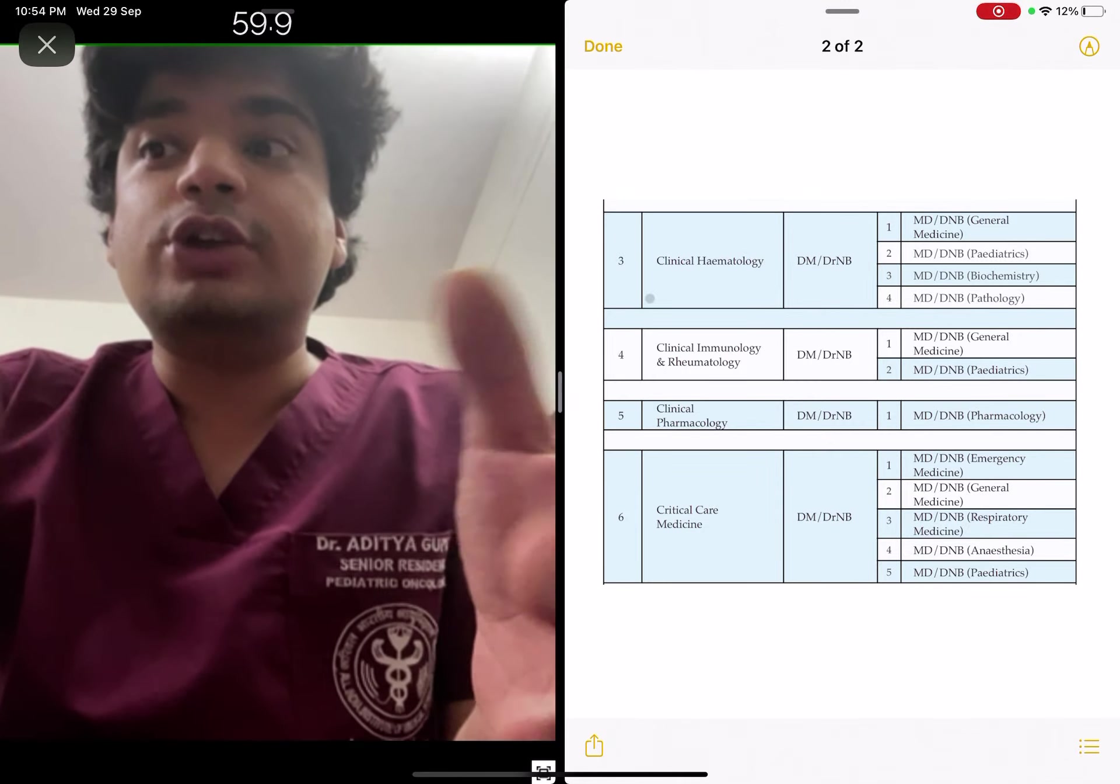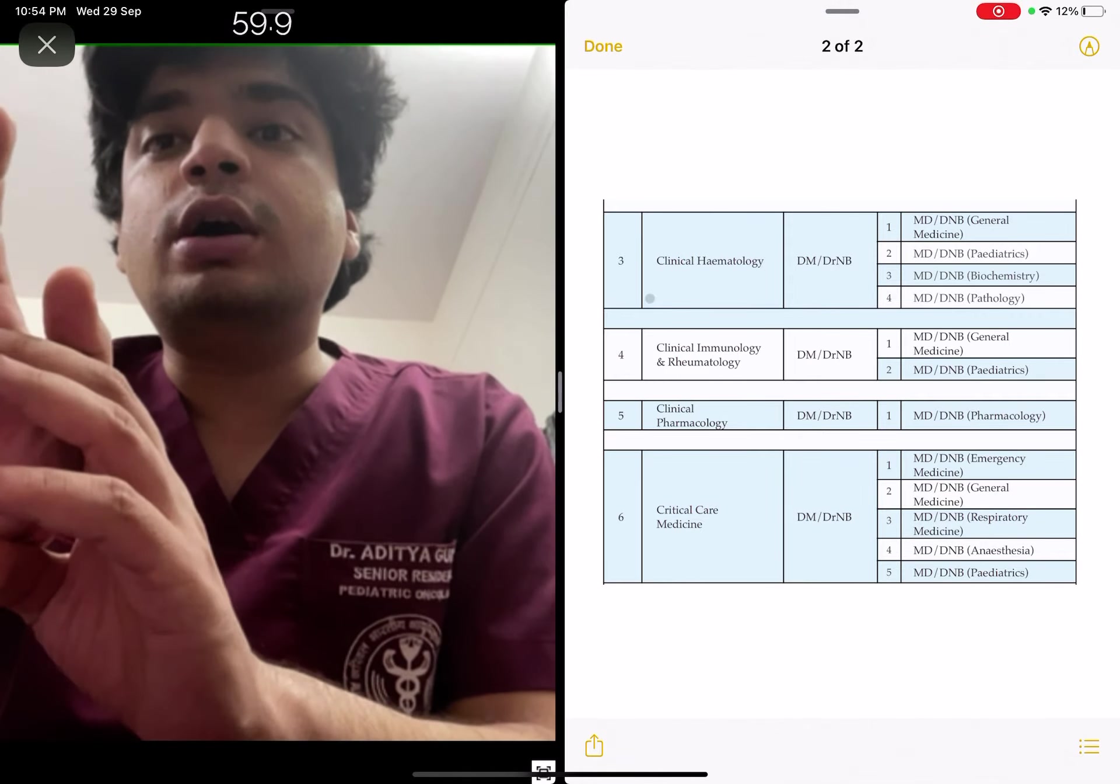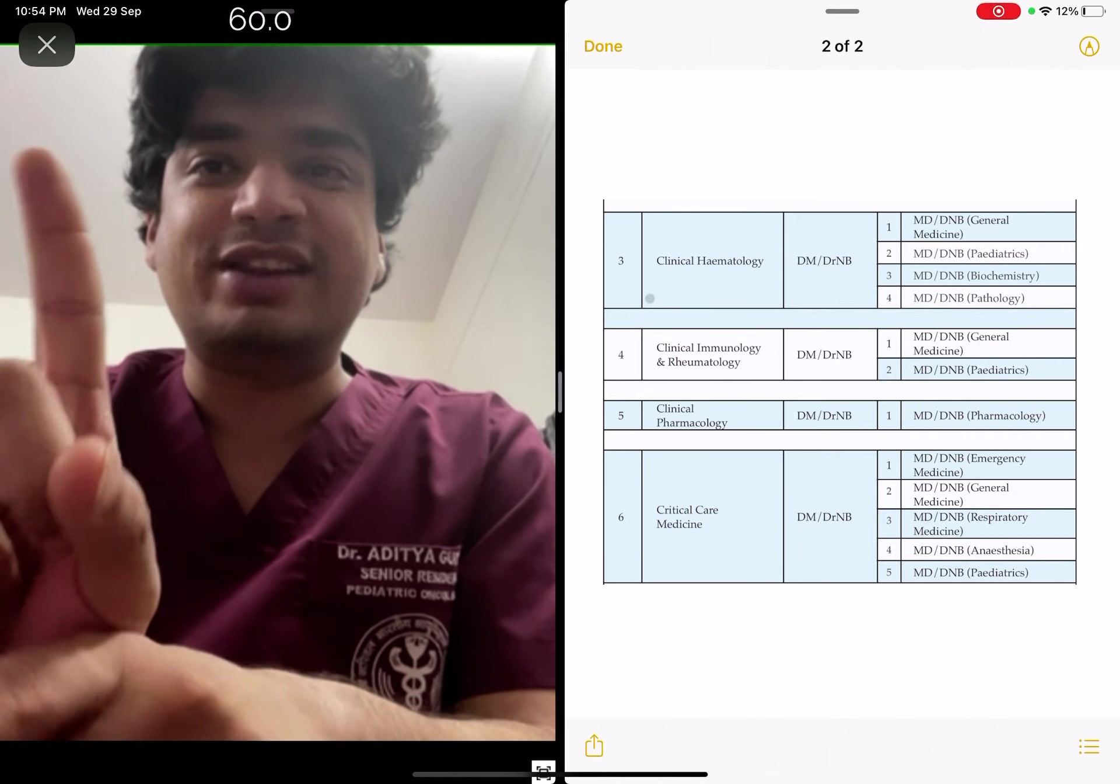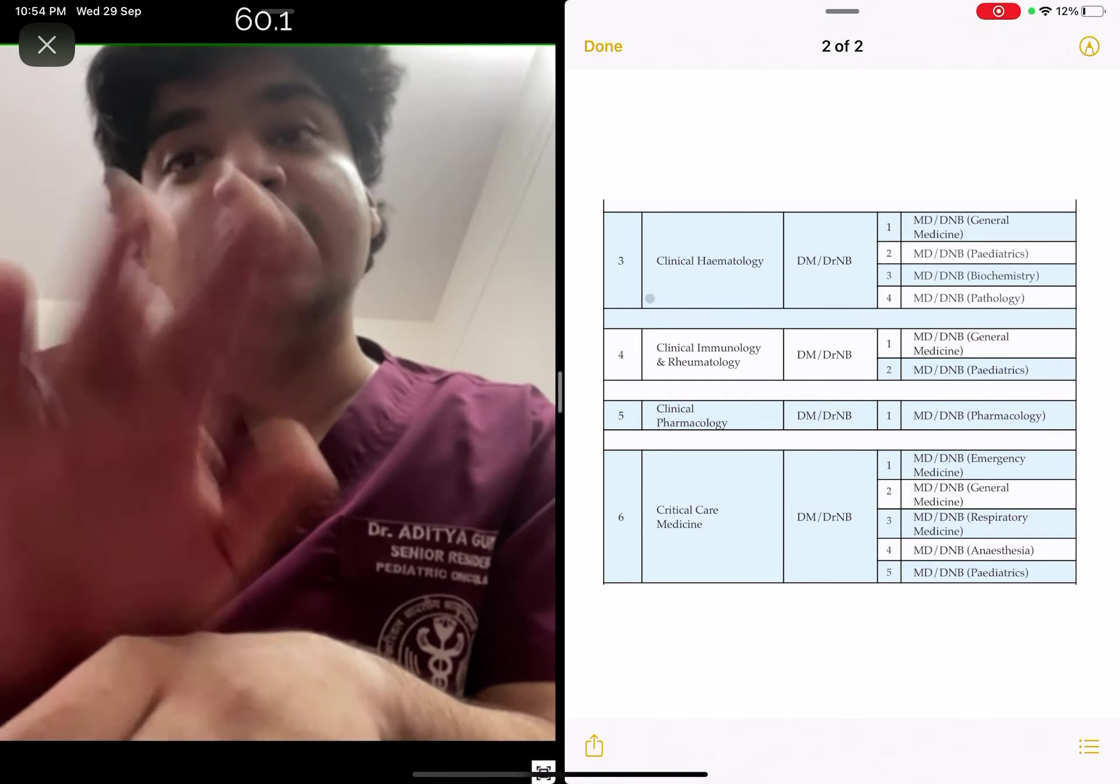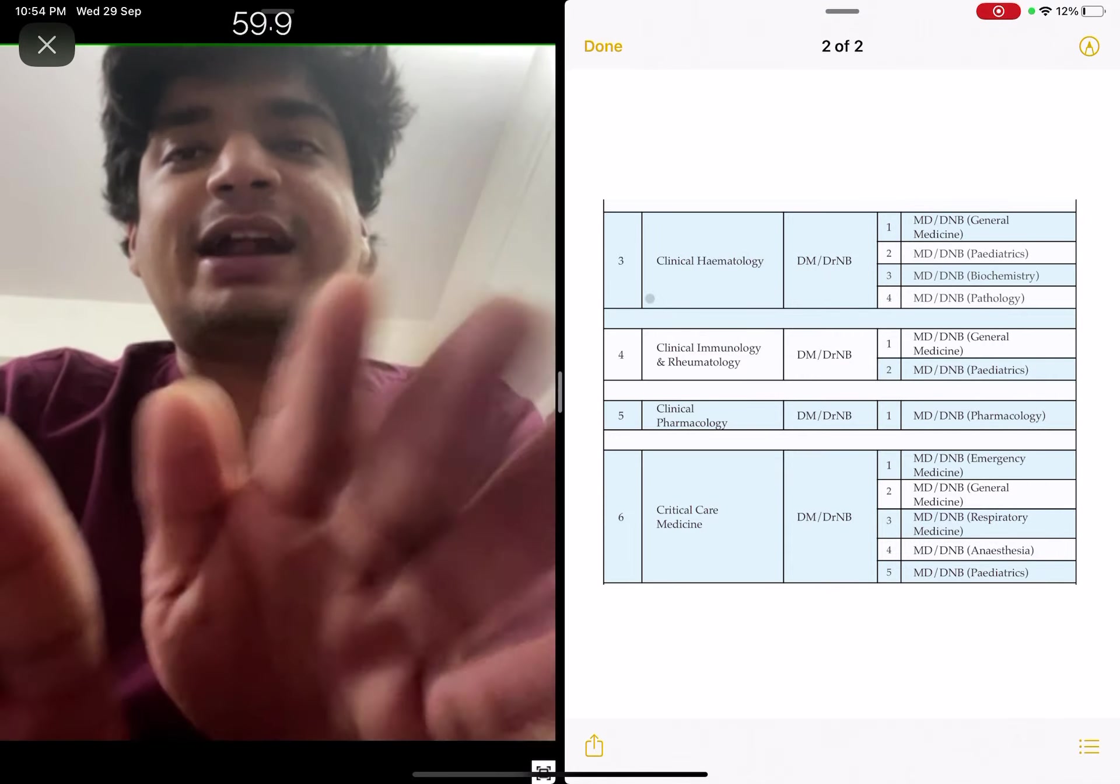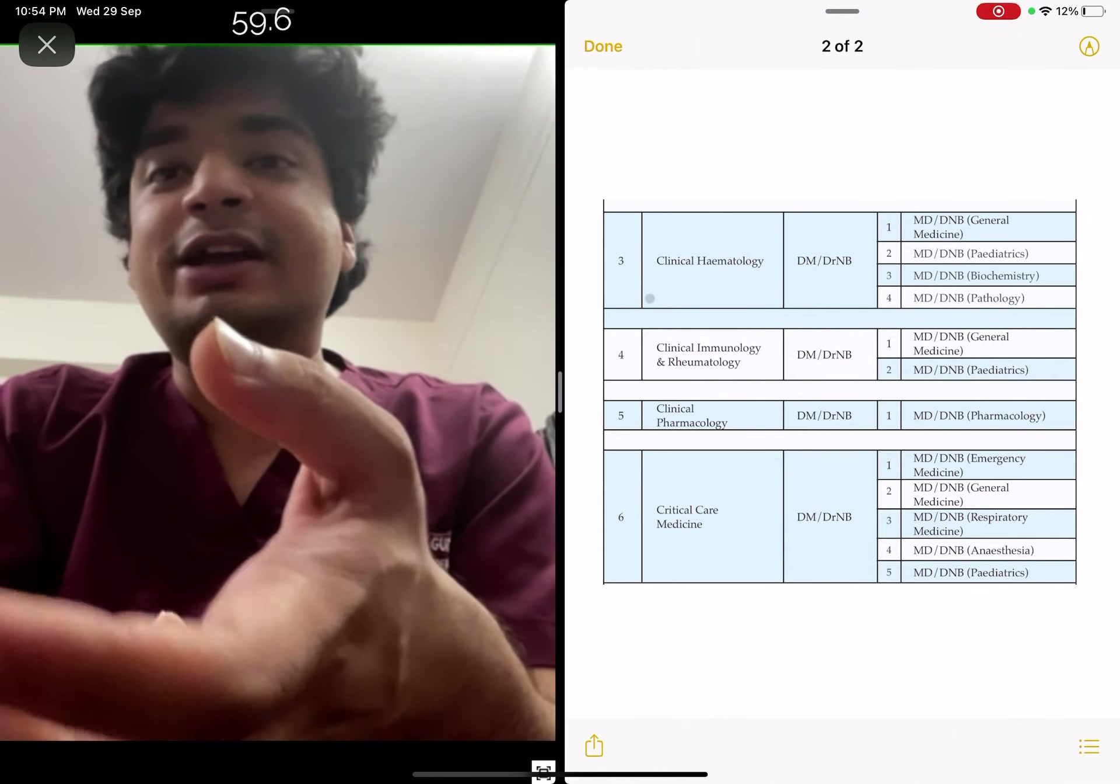So you can do pathology or biochemistry and still have a chance at hematology. You can do immunology, and like I emphasized in my previous video, pediatrics is eligible for all super specializations except gastroenterology. Actually at PGI it is eligible even in gastroenterology.